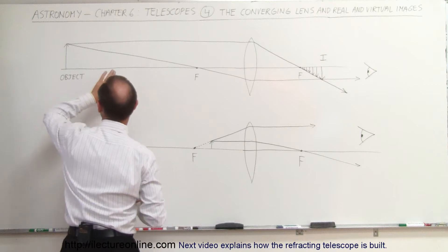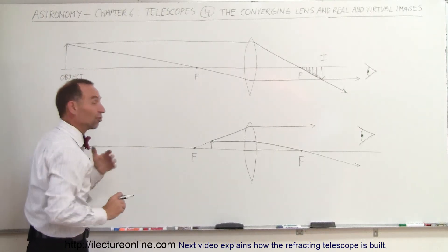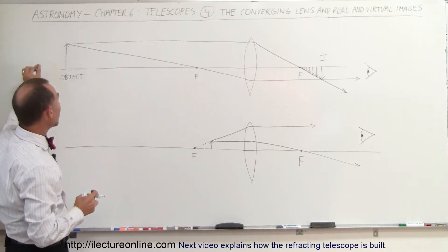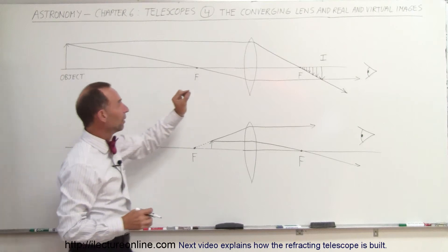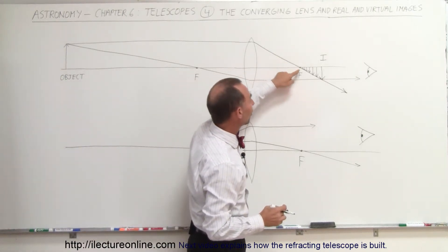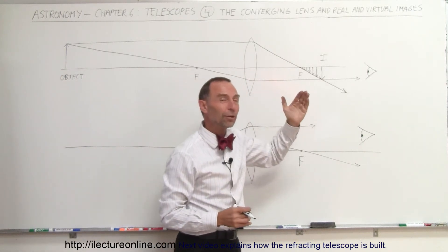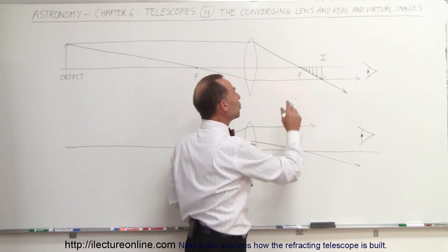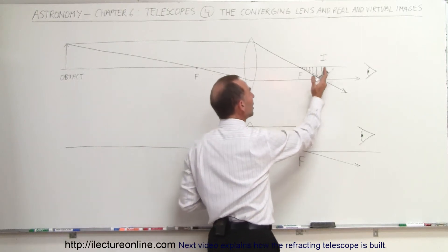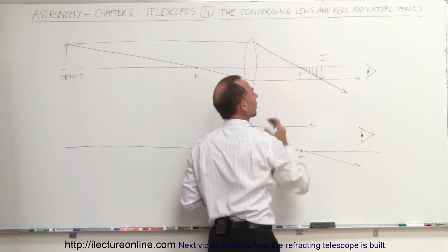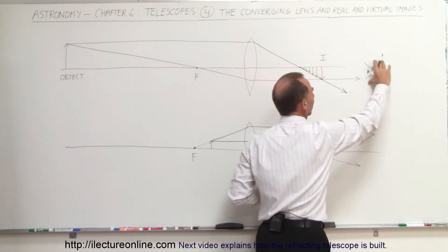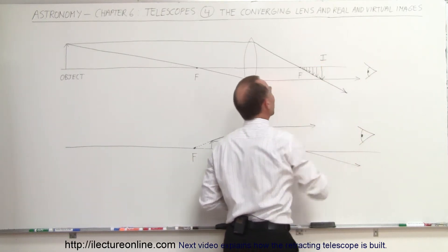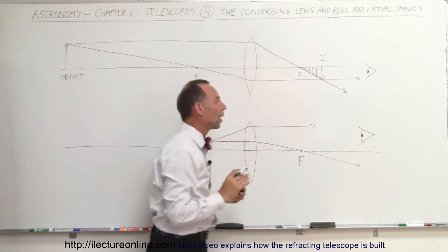Eventually when the object is really far away — such as stars and galaxies — the image will form very, very tiny, just past the focal point of that lens. And those are real images. They really appear there. You can actually make them appear on a piece of paper, and when the observer is sitting on the other side of the lens, they can see the image right there.